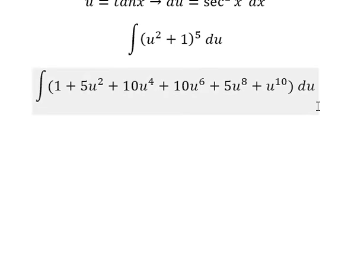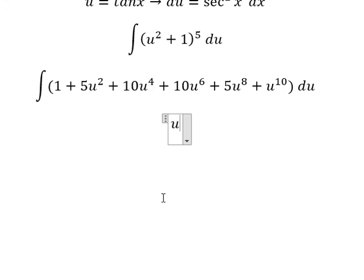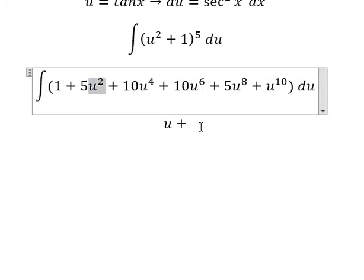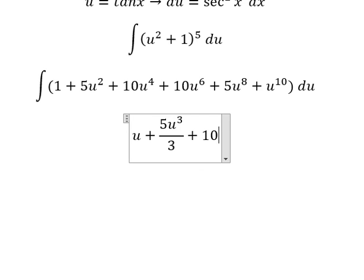After we expand, we can get the final answer. The integration of the constant 1 gives u. The integration of u² gives u³/3, so we have 5u³/3. The next one is 10u^5/5. The next one is 10u^7/7, similar for the next terms.